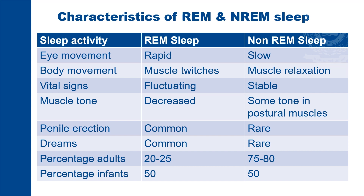Characteristics of REM and non-REM sleep: Eye movement is rapid in REM sleep and slow in non-REM sleep. Muscle twitches are seen in REM sleep whereas there is muscle relaxation in non-REM sleep. Vital signs like heart rate, blood pressure, and body temperature are fluctuating in REM sleep and stable in non-REM sleep. Muscle tone is decreased in REM sleep, while in non-REM sleep some tone is seen in postural muscles. Dreams are common and vivid in REM sleep; in non-REM sleep, dreams are rare and mostly unclear.